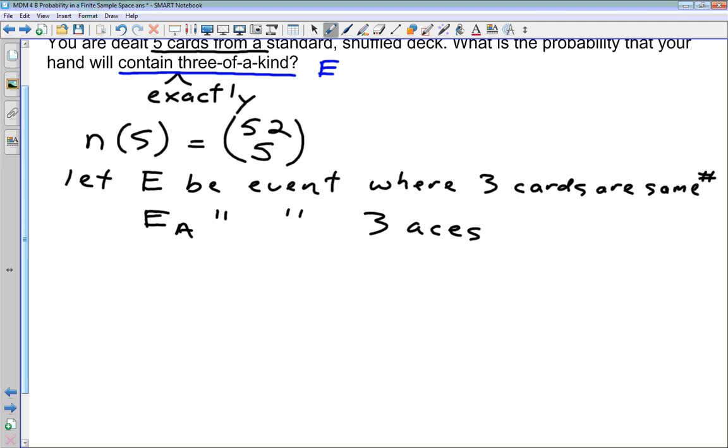So let's just look at that event first. How many ways can you get three aces into your hand? Well, four choose three. Now what does that four choose three represent, Kale? We've got four aces. We're choosing three of them.